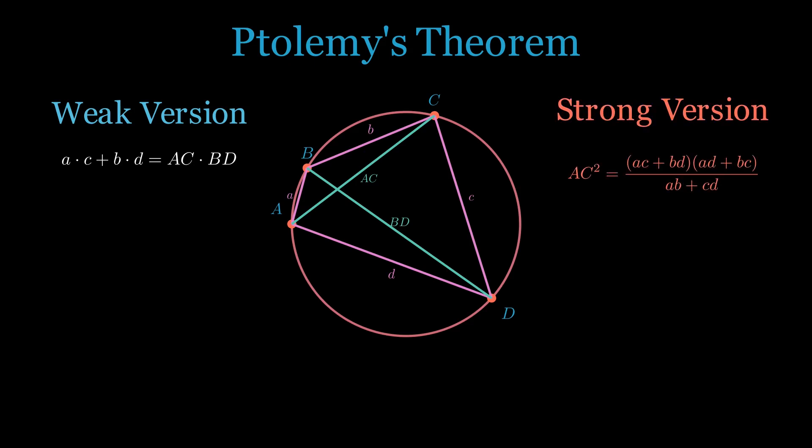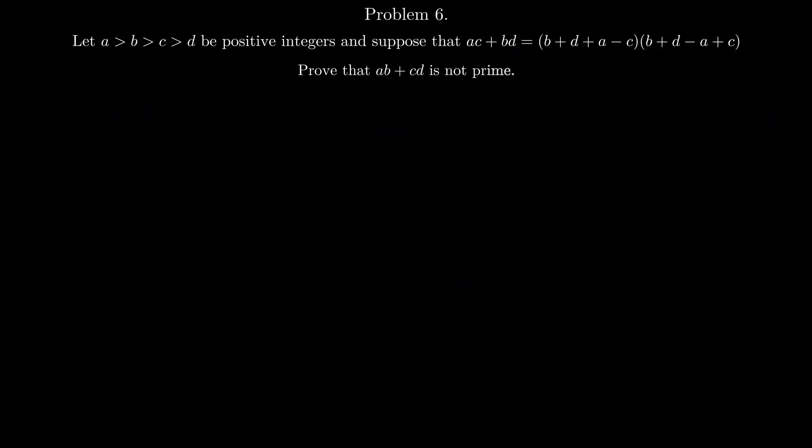Now that we have our three geometric facts, we can return to the behemoth that is problem 6. Let's multiply everything out in the condition and rewrite it as follows. From this point we'll try to interpret everything geometrically. Let X, Y, W be a triangle so that X, W has a length a, b, X, Y has length c, and Y, W has length square root of a squared minus ac plus c squared.